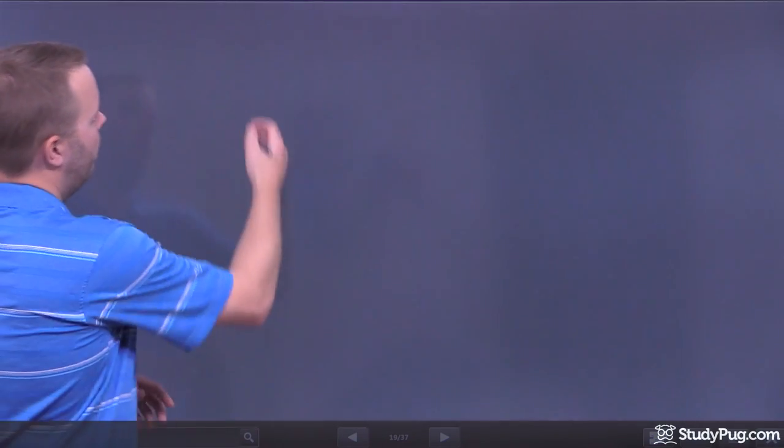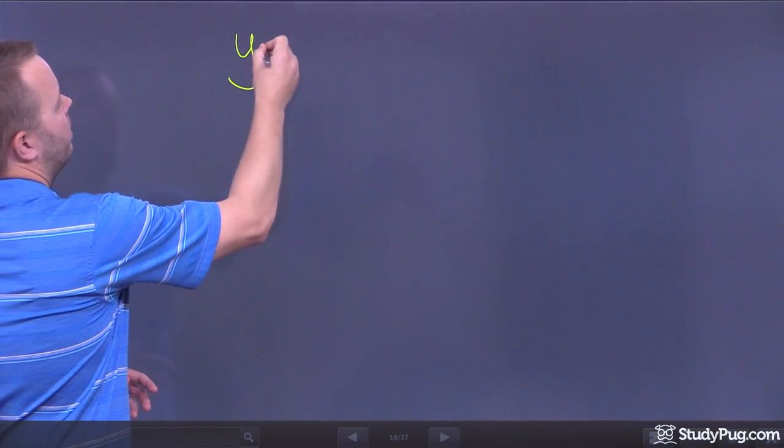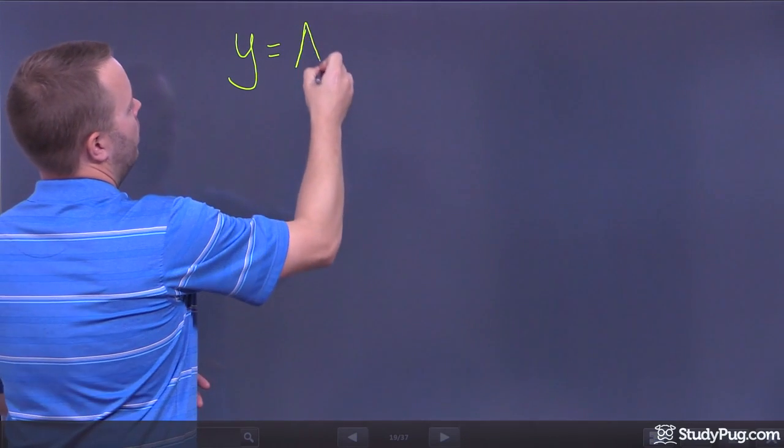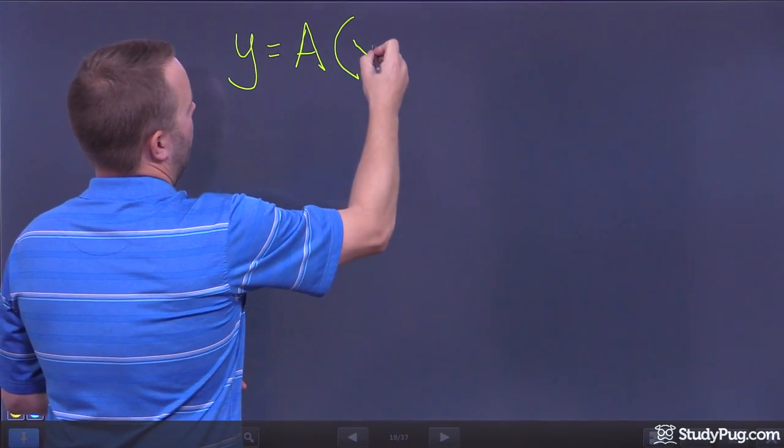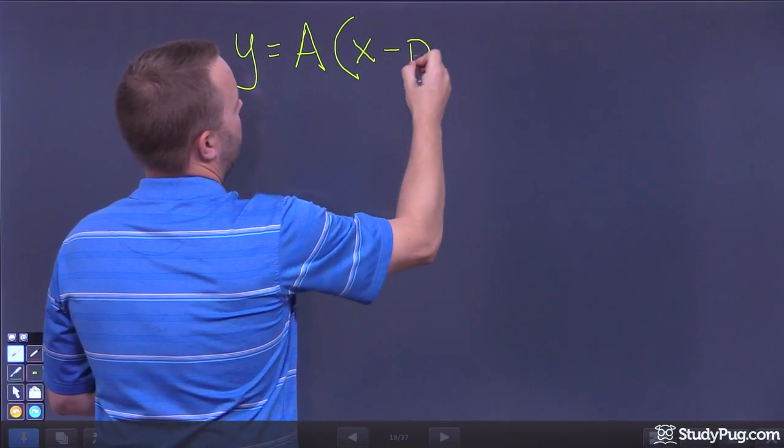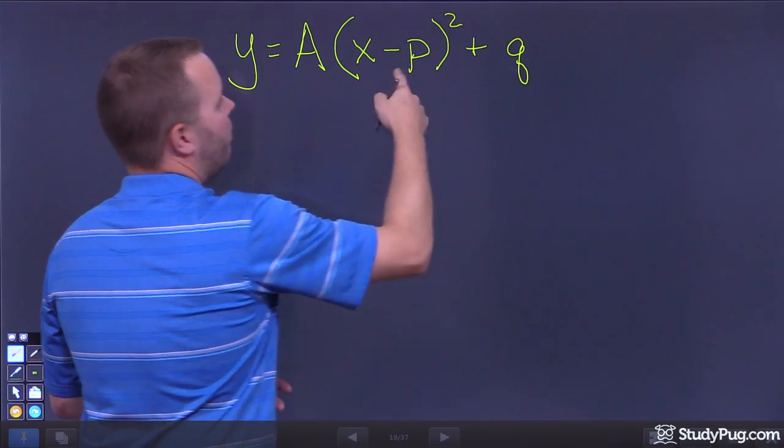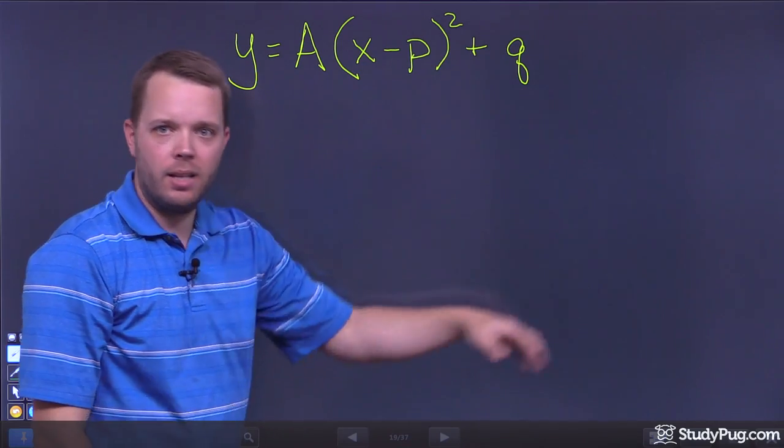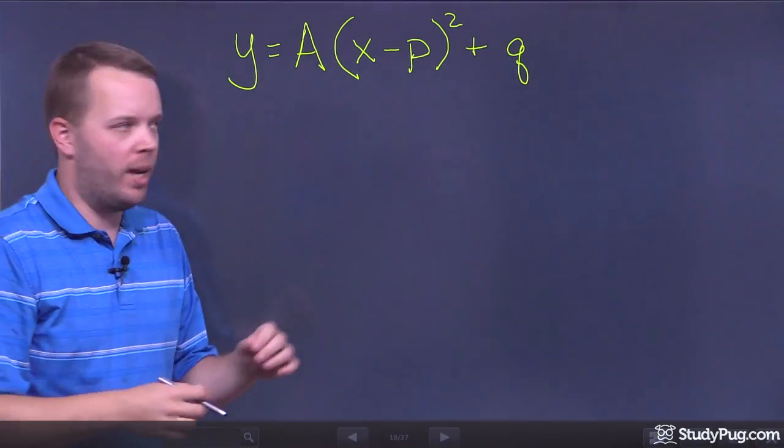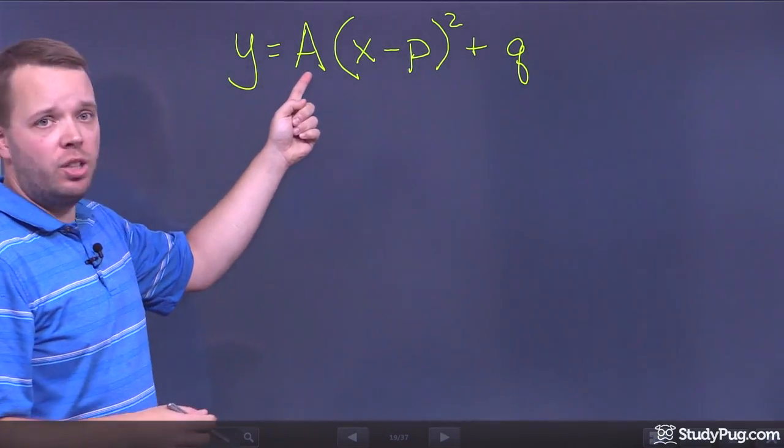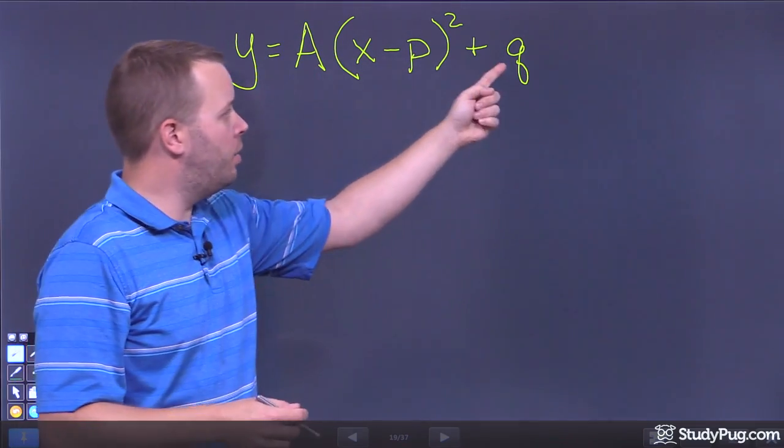So what was vertex form? Well, vertex form was something like this: y is equal to A, and then you had x minus p squared plus q. Some of you might have learned this as h and k. There's a bunch of different ways, but for the most part, you've got some integer value here, and you've got two integer values there.